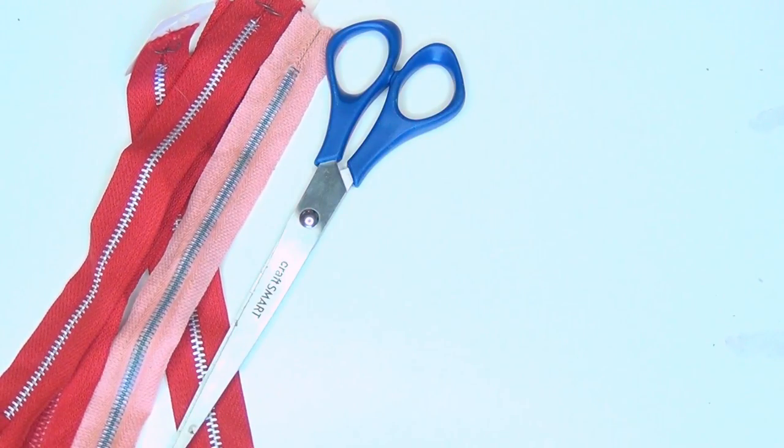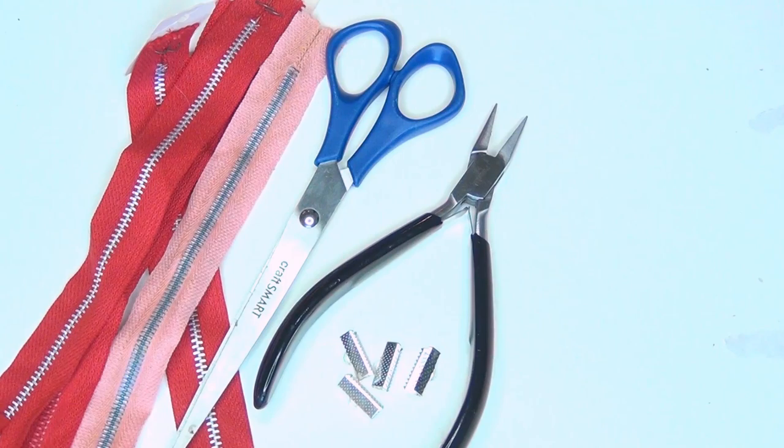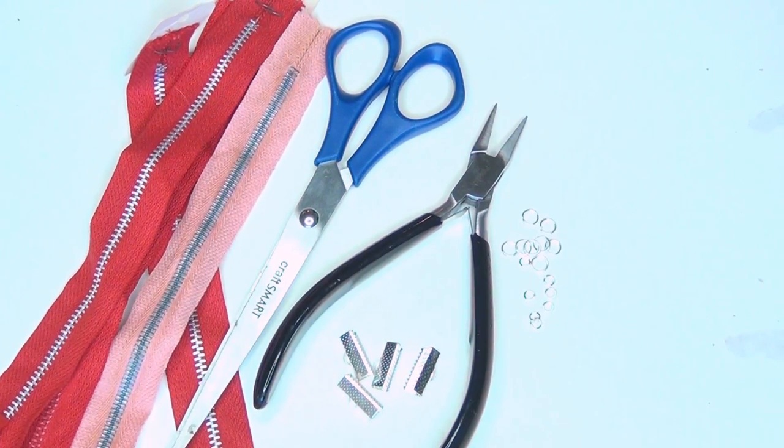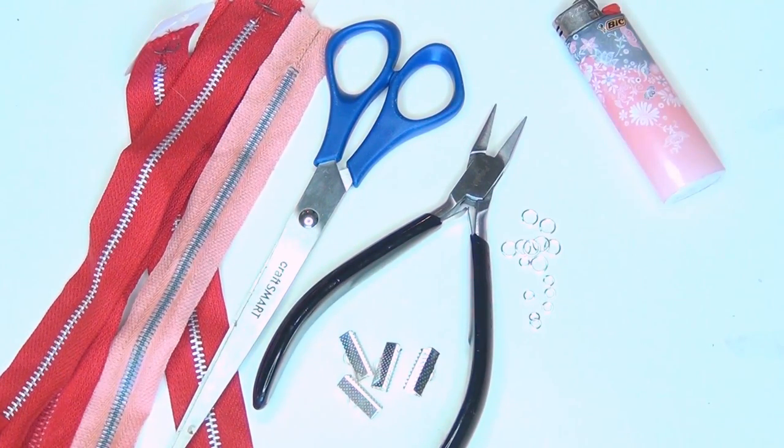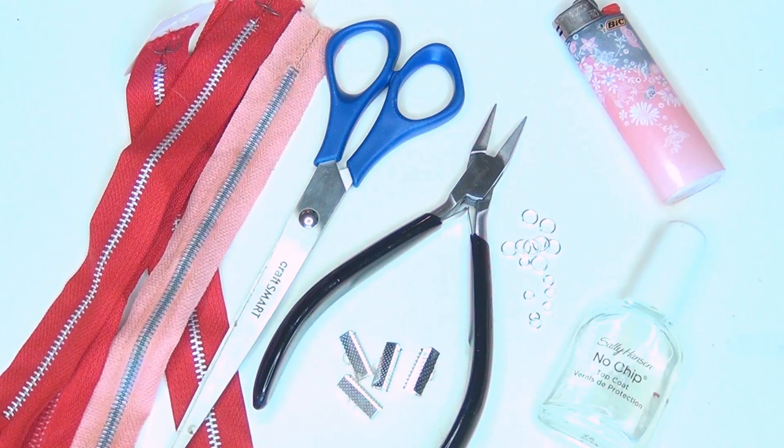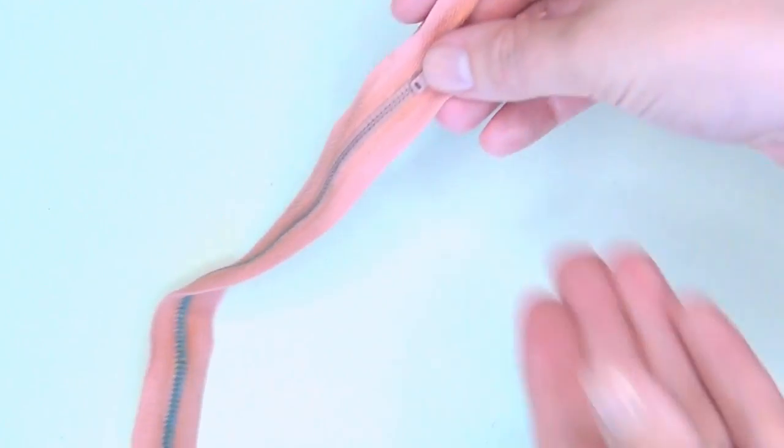For this project you'll need zippers, scissors, jewelry pliers, end crimps, small and large jump rings, and either a lighter or clear nail polish as well as whichever type of clasp you prefer—and I prefer lobster clasps.